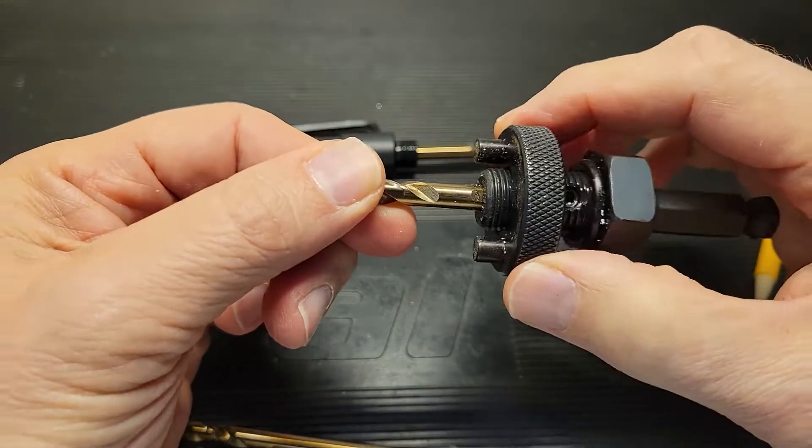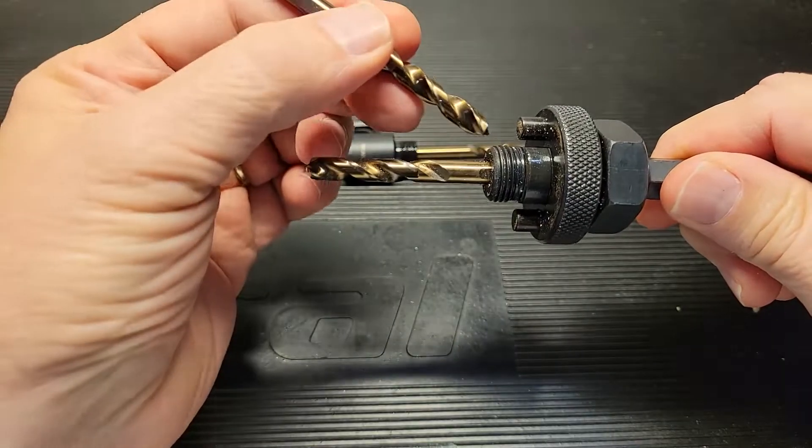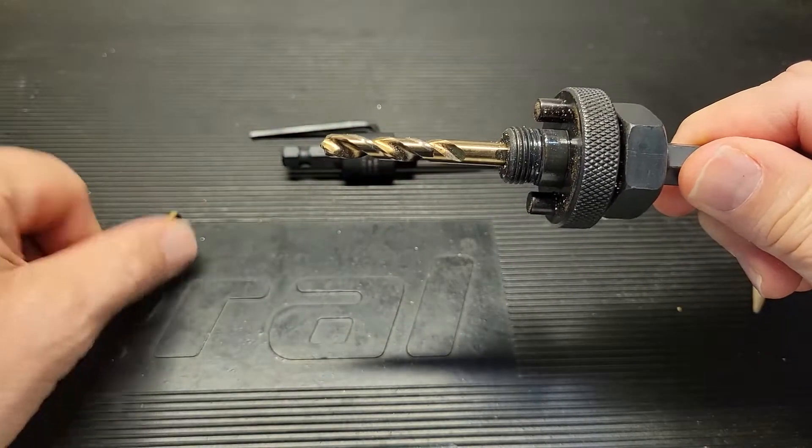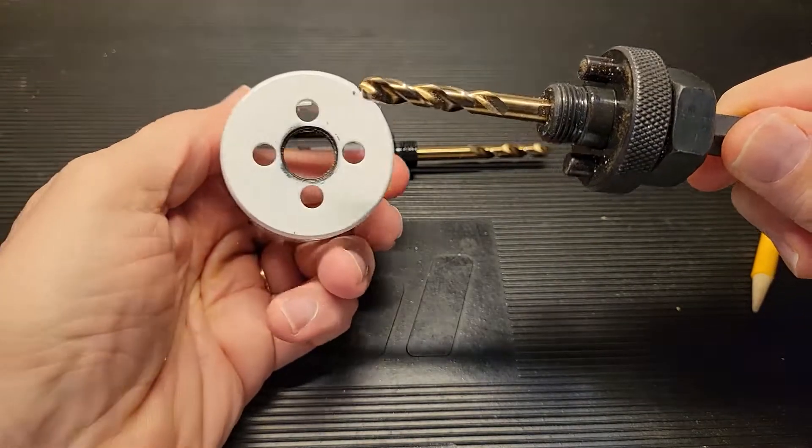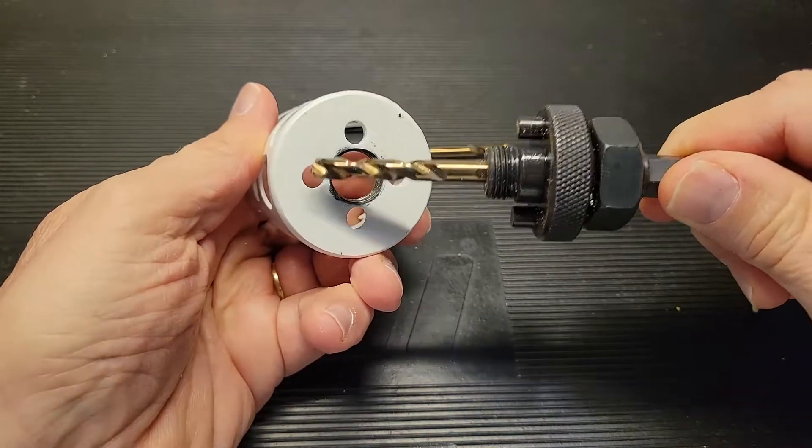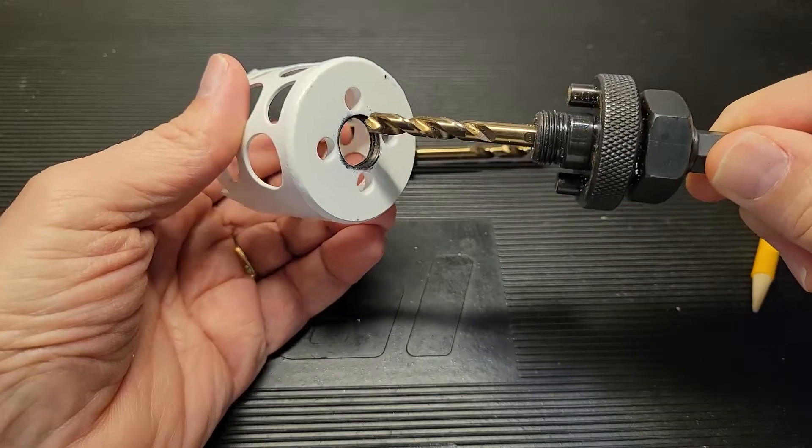In front of that is a fastener that has two pins on it, and it just floats back and forth. At the very end here is a threaded fastener, and that is what's going to hold your hole saw in place. The hole saw has four holes in it, most of them, not all of them, and then there's this threaded inside.